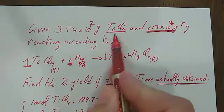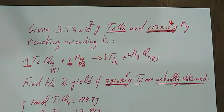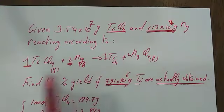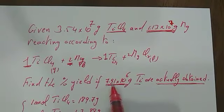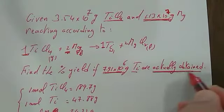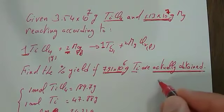Given the following masses of titanium chloride and magnesium reacting according to this reaction, find the percent yield if we have 7.91 times 10^6 grams of titanium actually obtained. Actually obtained means this is the actual yield.